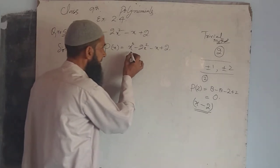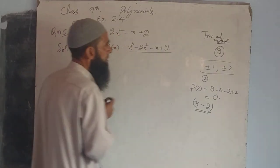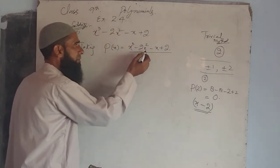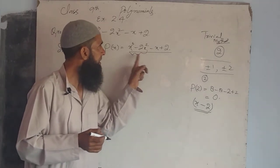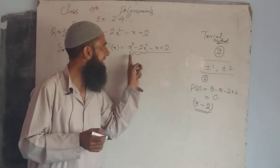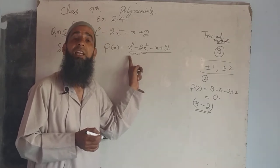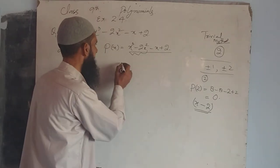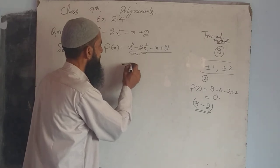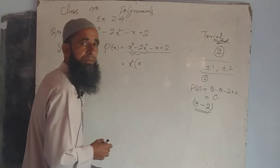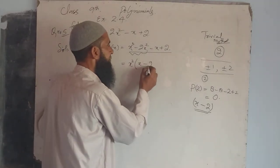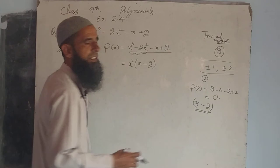Now what to do here? This polynomial - we will take two terms. In these two terms we get x² as common. We write this as x² times (x minus 2).